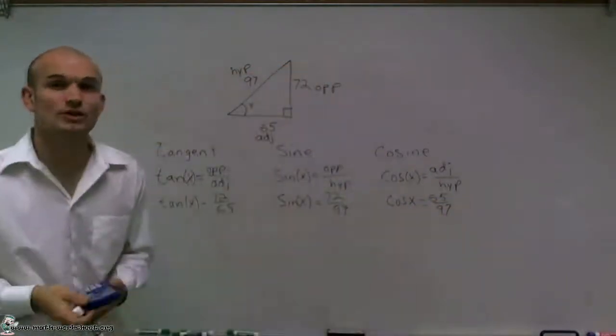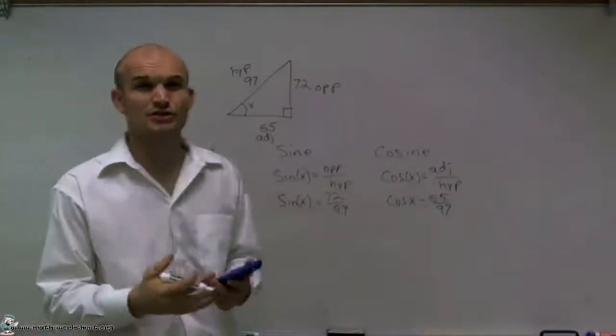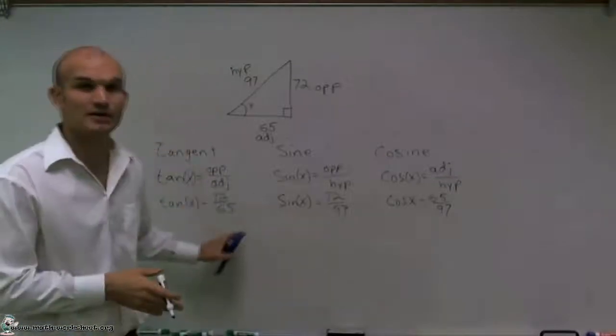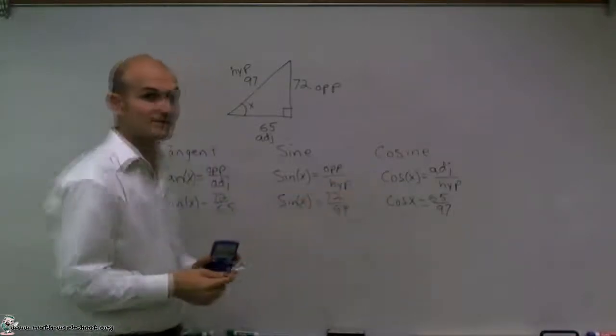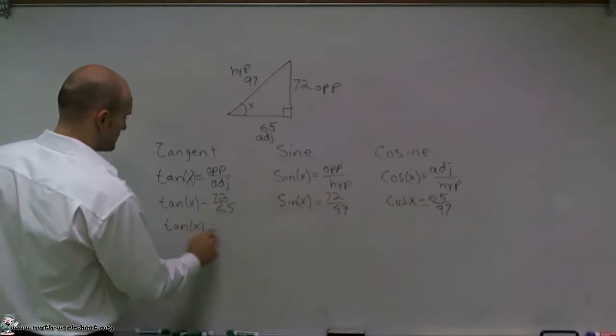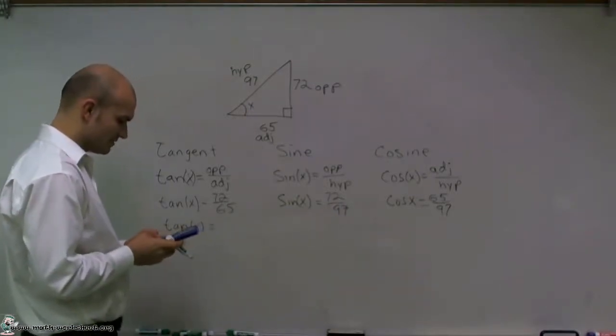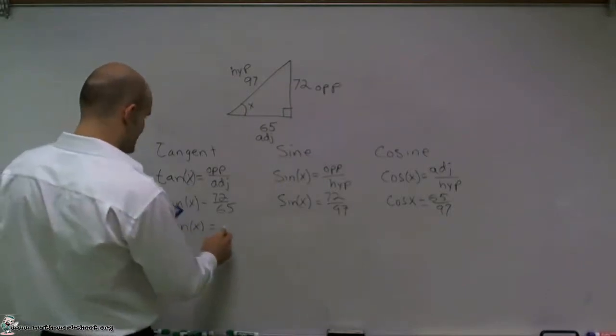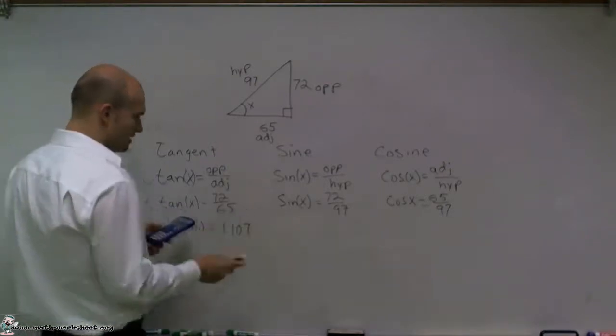It'll be helpful to look at some of the decimals for these problems. When you're using the decimal, I want you to use the full decimal in your calculator. I'm just going to write down an abbreviated decimal so you can understand that each ratio is different. The tangent of x is going to be 72 divided by 65, which is 1.107.